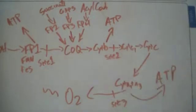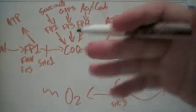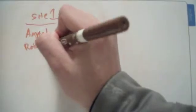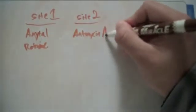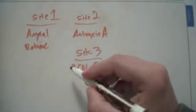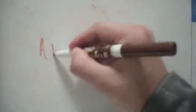A couple things to note about this. Site one, site two, and site three. They all have their special inhibitors. Amytal, rotenone, antimycin A. And at site number three, carbon monoxide. Site three's inhibitors are cyanide, carbon monoxide, H2S, and azide.